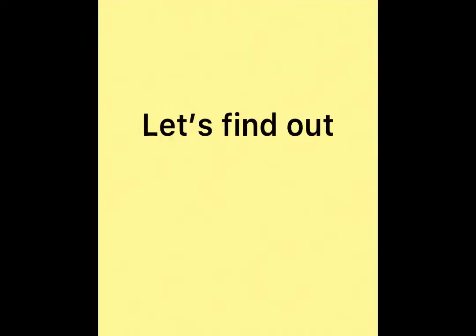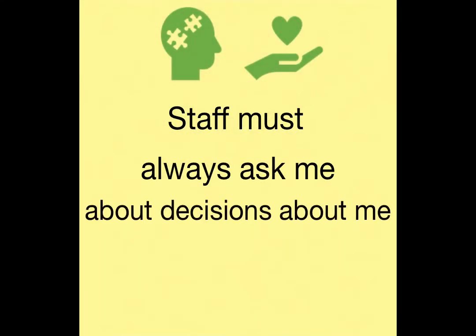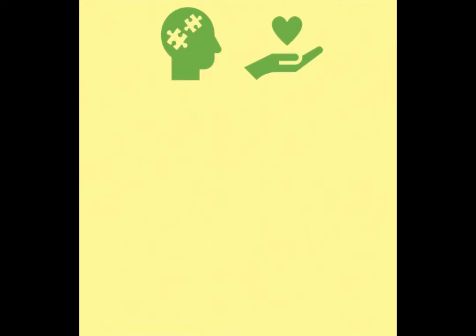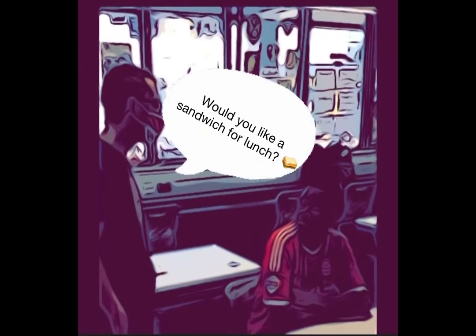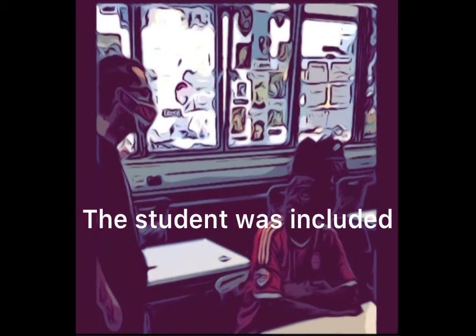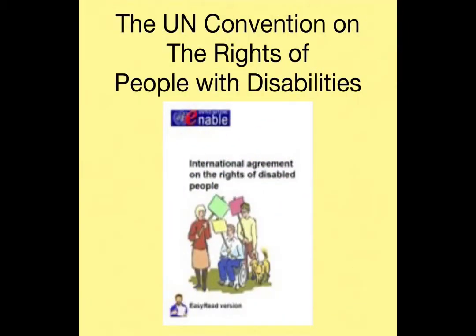Let's find out what this right means. Staff must always ask me about decisions that are about me before making them. In the classroom: 'Okay, sandwich for lunch?' 'No, I'd like a burger.' The student was included in the decision about them. This is right.